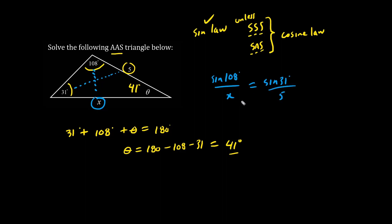So we have sine 31 over 5. The angles are on the top, the numbers on the bottom, or vice versa. The numbers could be on the top and the angles could be on the bottom. We can cross multiply. So we have X sine 31 equals 5 times sine 108. Dividing both sides, we have X equals 5 sine 108 degrees divided by sine 31, which is approximately 9.23. So we solved the unknowns.